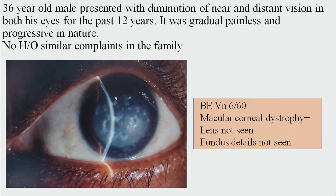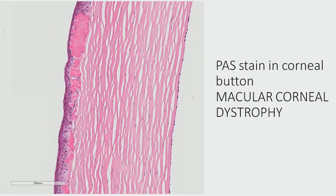A 36-year-old male presented with gradual, painless, progressive diminution of near and distant vision in both eyes for the past 12 years, with no family history of similar complaints. Both eye vision was 6/60. A diagnosis of macular corneal dystrophy was made on examination; lens and fundus details could not be seen. The patient underwent penetrating keratoplasty, and using a special stain on the corneal button, a final diagnosis of macular corneal dystrophy was confirmed.